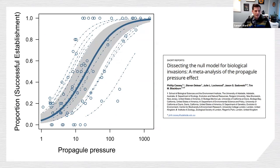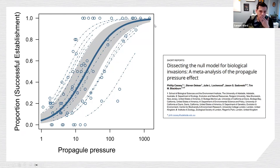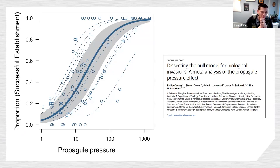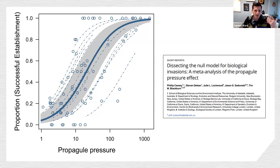This relationship between propagule pressure and establishment holds for several different taxa. More individuals of a species arriving at a given location gives you a greater chance of establishment. What we wanted to determine was what factors drive propagule pressure in the first place. We know a lot about the different pathways through which an organism arrives, but we don't know much about what factors govern entry into those invasion pathways.